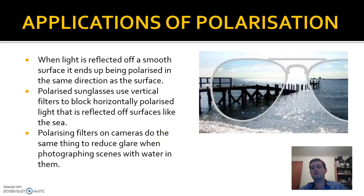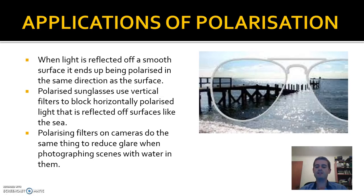One of the first things to know about polarization applications is that when light reflects off a smooth surface, it ends up with the same polarization as the orientation of that surface. So light reflecting off a horizontal surface like the sea becomes horizontally polarized. If you want to block that — say with polarizing sunglasses — you use vertically polarized filters. Those will block a fair bit of that horizontally polarized reflected light. In reality, the light isn't completely horizontally polarized, so some vertical component can still pass through, but polarizing sunglasses do a very good job of blocking most of the glare.